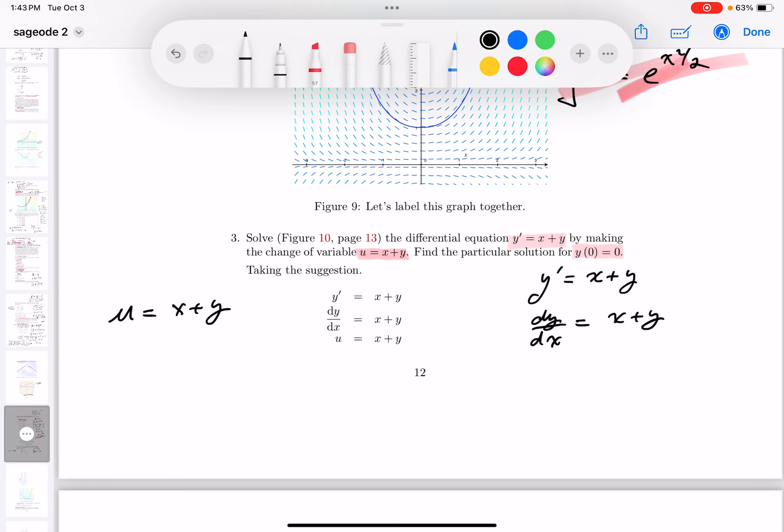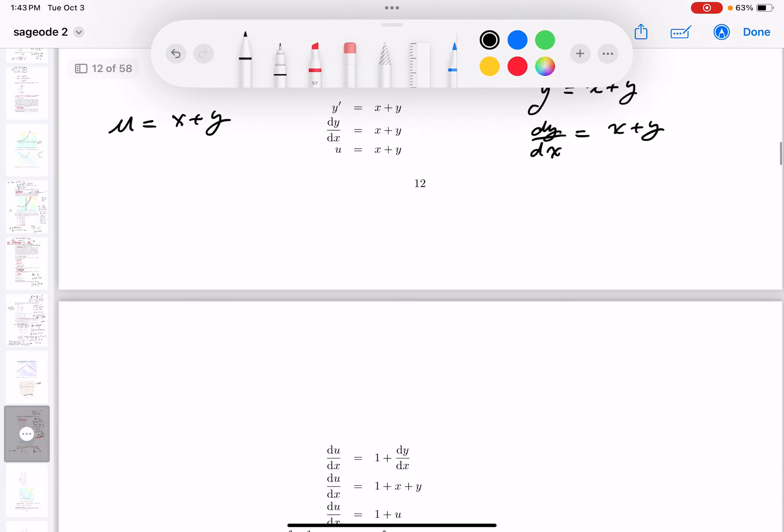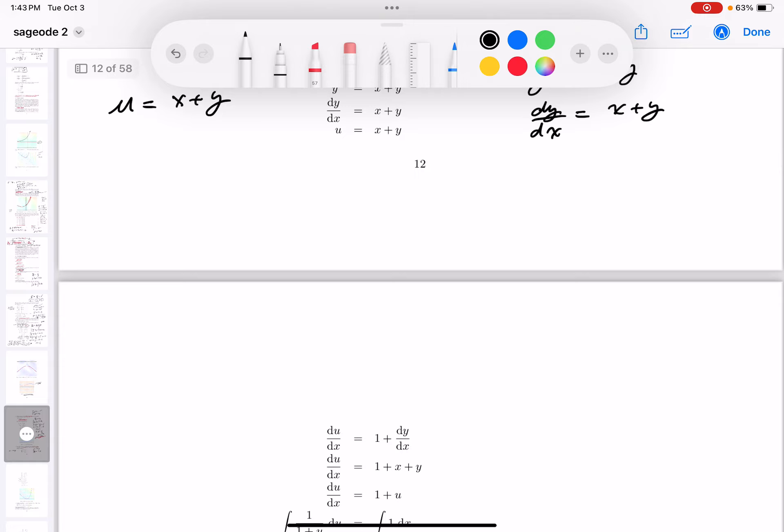So then, if you did that, let me write that down for you. And looking at it, I'm going to write down du/dx. What would that equal? That would equal the derivative of x is 1 plus, now it's going to be the derivative of y, dy/dx. So du/dx equals 1 plus dy/dx.